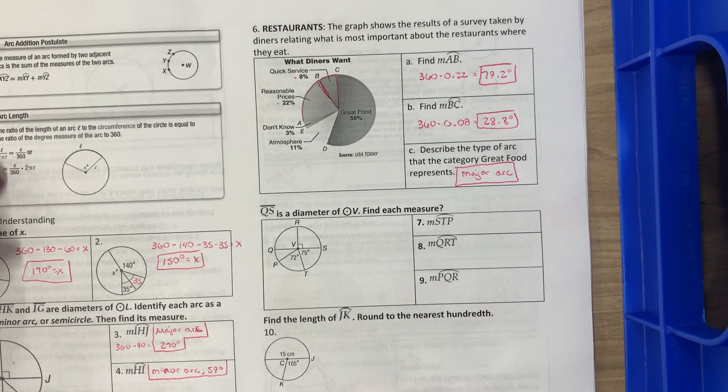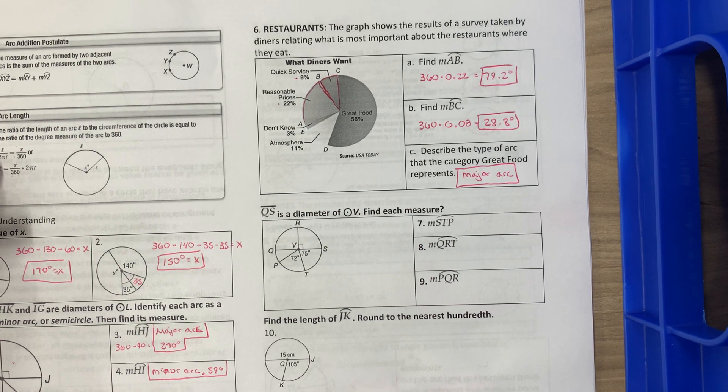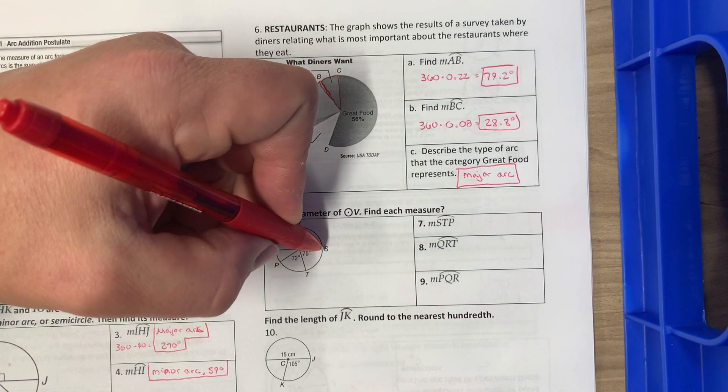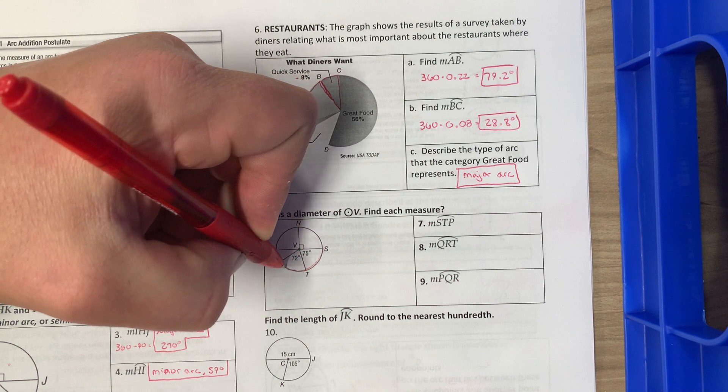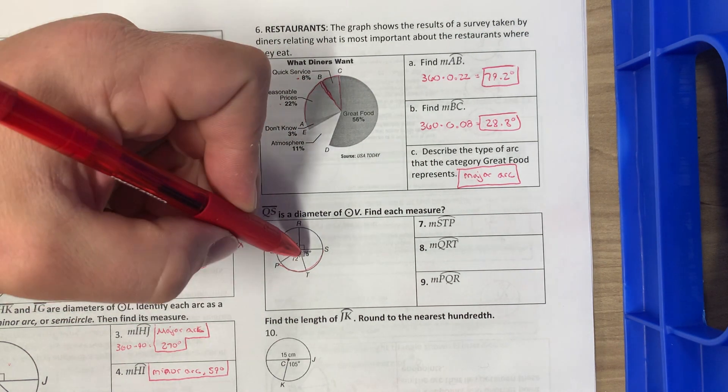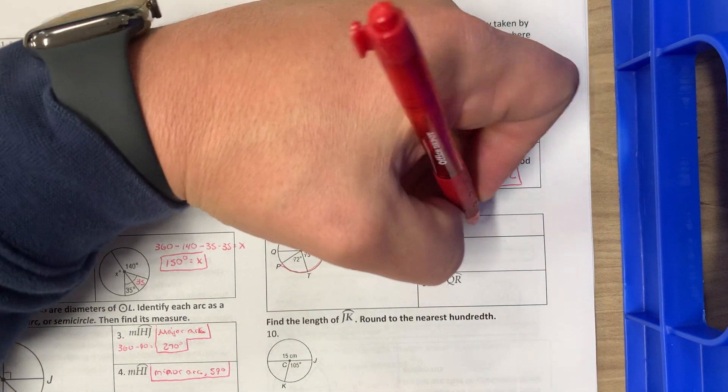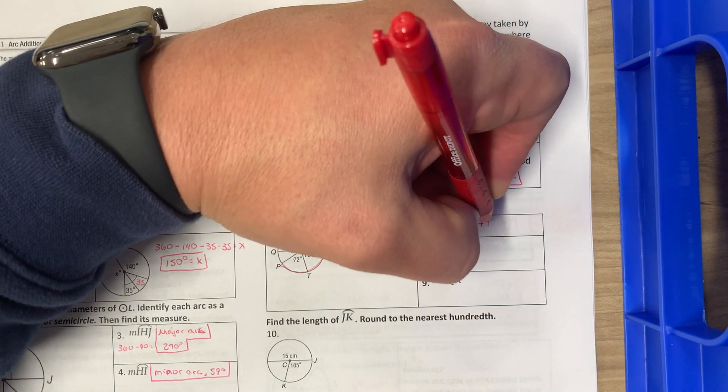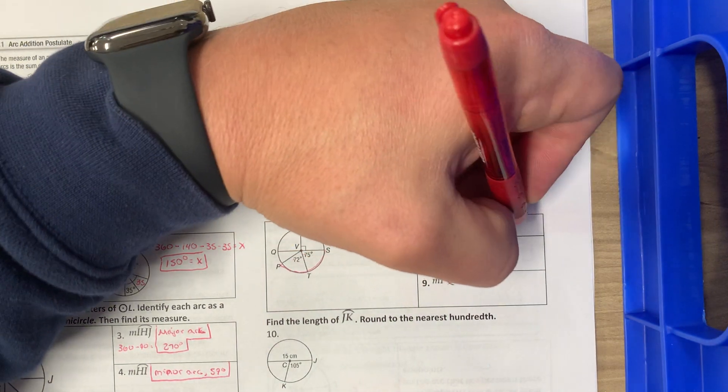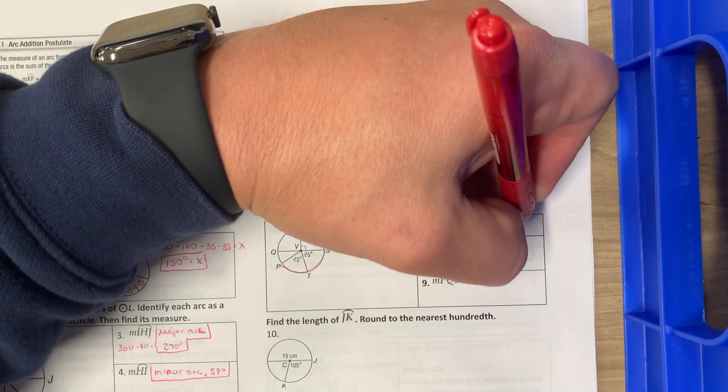QS is a diameter of circle V. Find the measure. So STP, STP is this guy right here. So we are just going to add 75 plus 72, and that is going to equal 147 degrees.